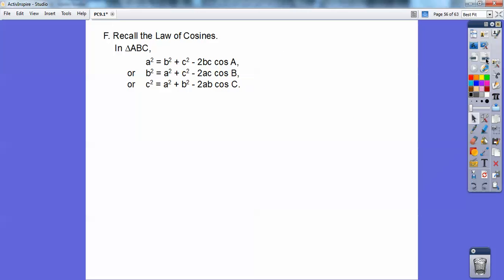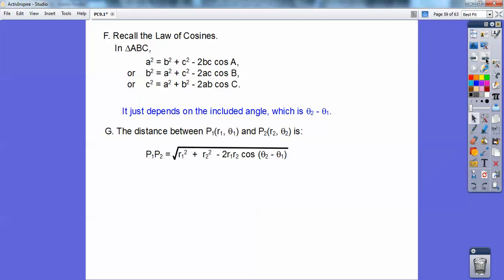Recall the law of cosines, give you this formula right there. It just depends on the included angle, and in this case, it's theta 2 minus theta 1. So the distance between polar coordinate 1 with radius 1, theta 1, and polar coordinate 2, r2, theta 2, is this formula. And we just got that from the law of cosines right up there. So the distance between p1, p2, that's distance formula right there.